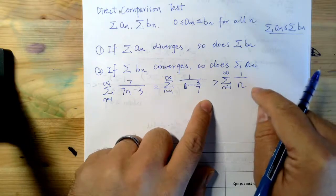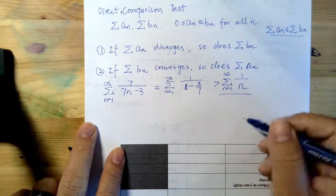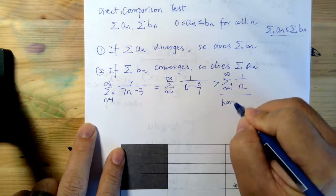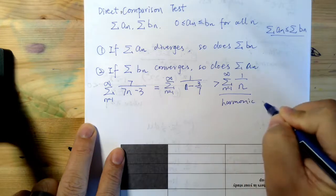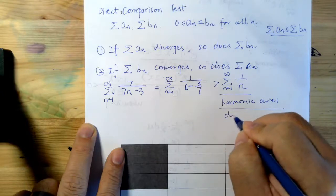And this 1 over n, and we know that this 1 over n series, it's a harmonic series, right? And harmonic series, it's diverged.